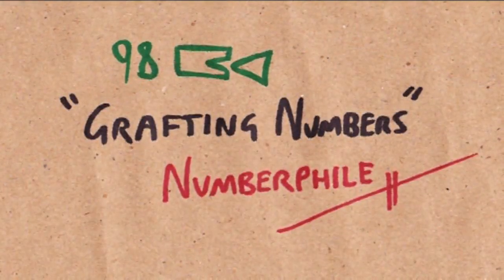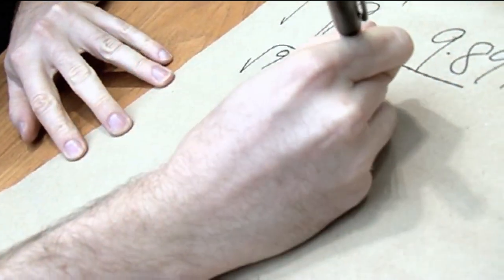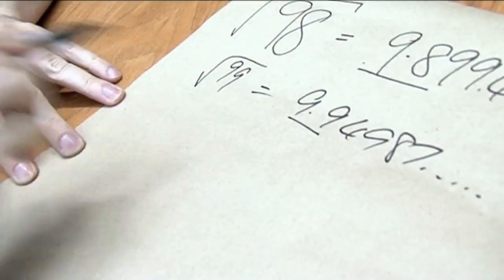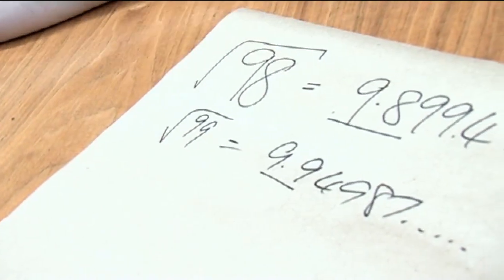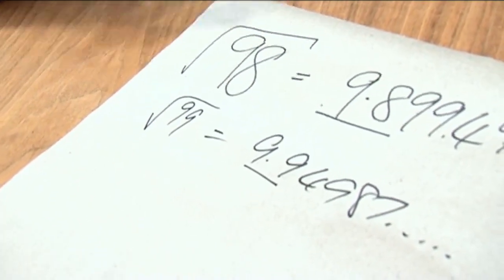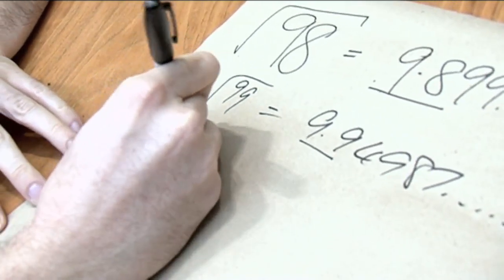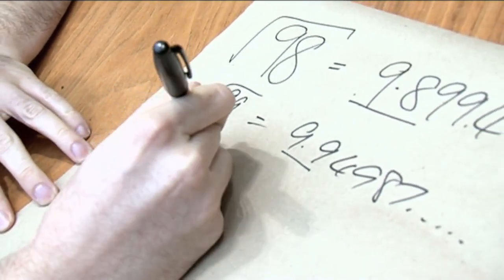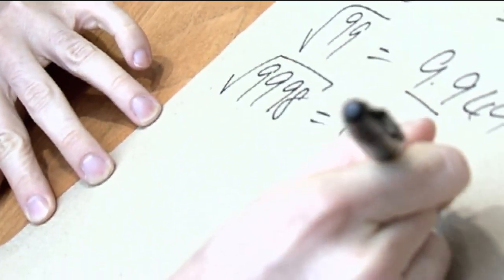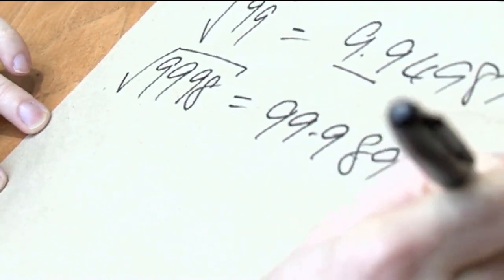And this works for other numbers. If you take the square root of 99, it equals 9.949. And if you take the square root of 9,998, that equals 99.98999.